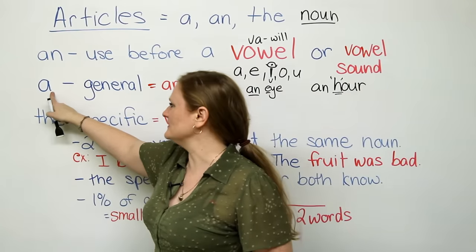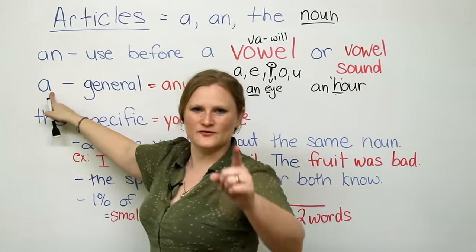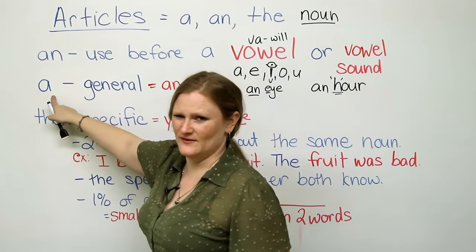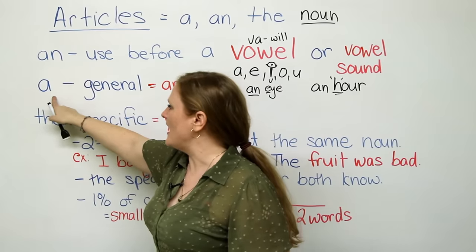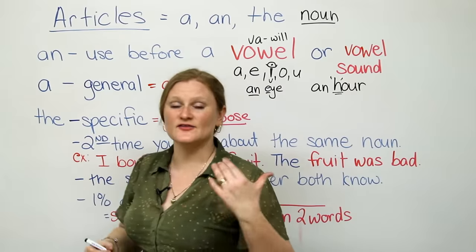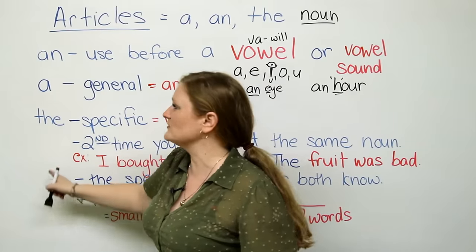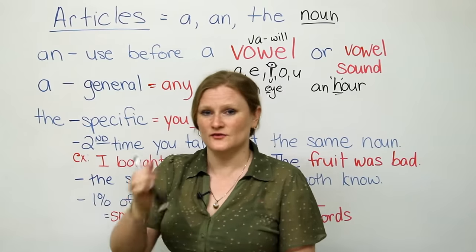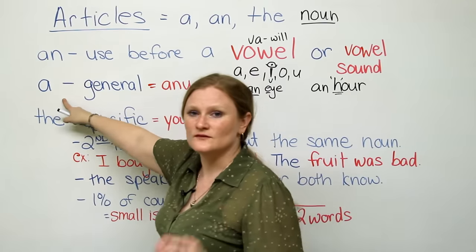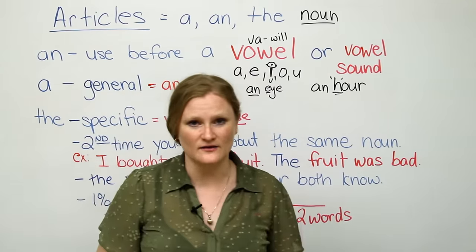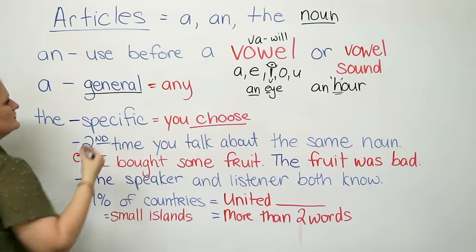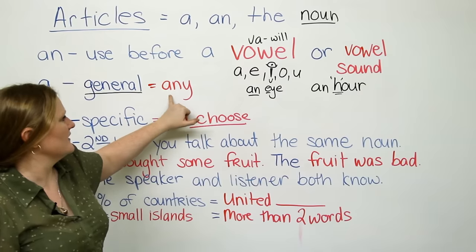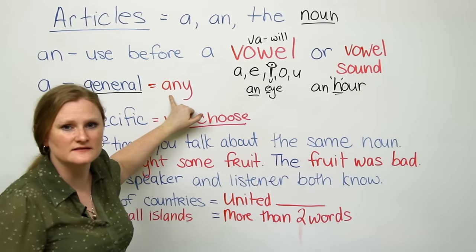The next one is A. The very first letter of our alphabet. A is a vowel. Don't let that confuse you. A, we use for, again, a singular noun. All of these are going to be used with a singular noun. If the noun is plural, if the noun has an S, do not use an article. So, A, we use for a singular noun in a general form. You can think of this easier as using, replacing it with the word any.